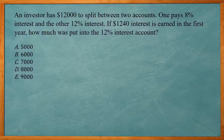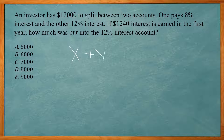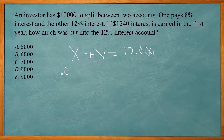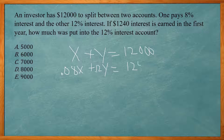This one says an investor has $12,000 to split between two accounts — one pays 8% interest and the other 12%. If $240 of interest is earned in the first year, how much was put in the 12% interest account? Normally this is a system of equations: x plus y equals 12,000, and 0.08x plus 0.12y equals 1,240. Instead of solving by substitution, we're going to create two matrices and solve using matrix operations.